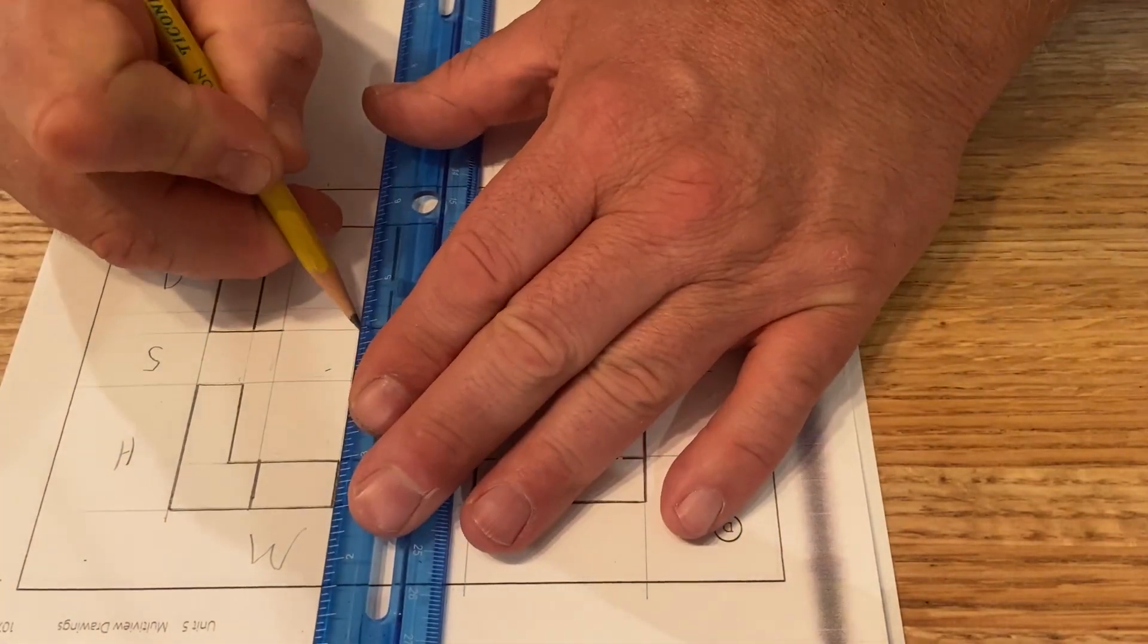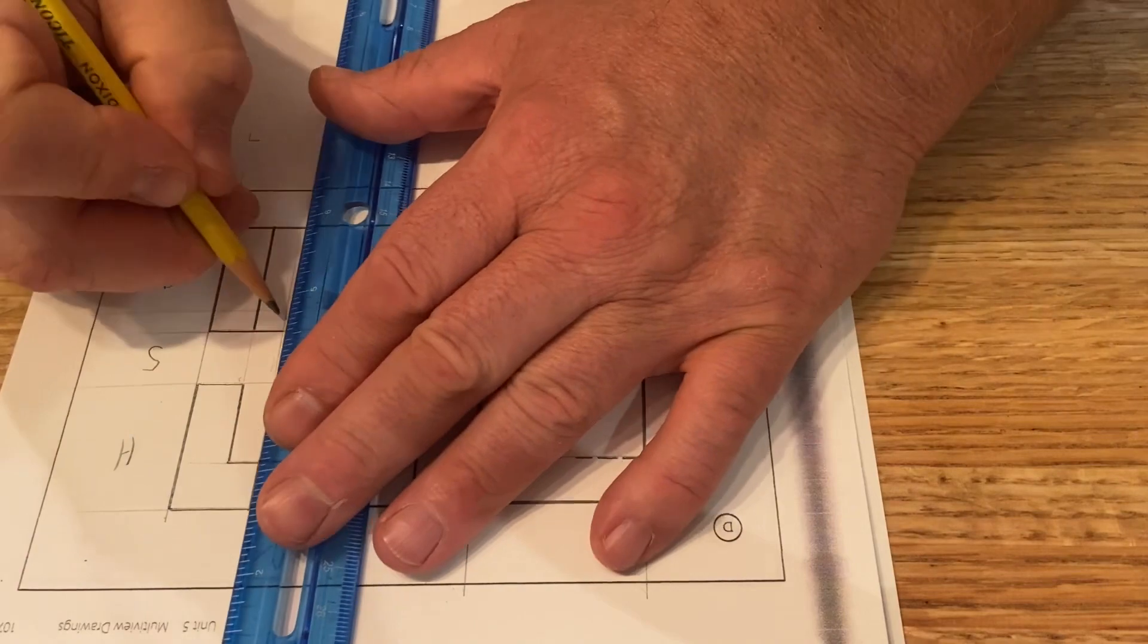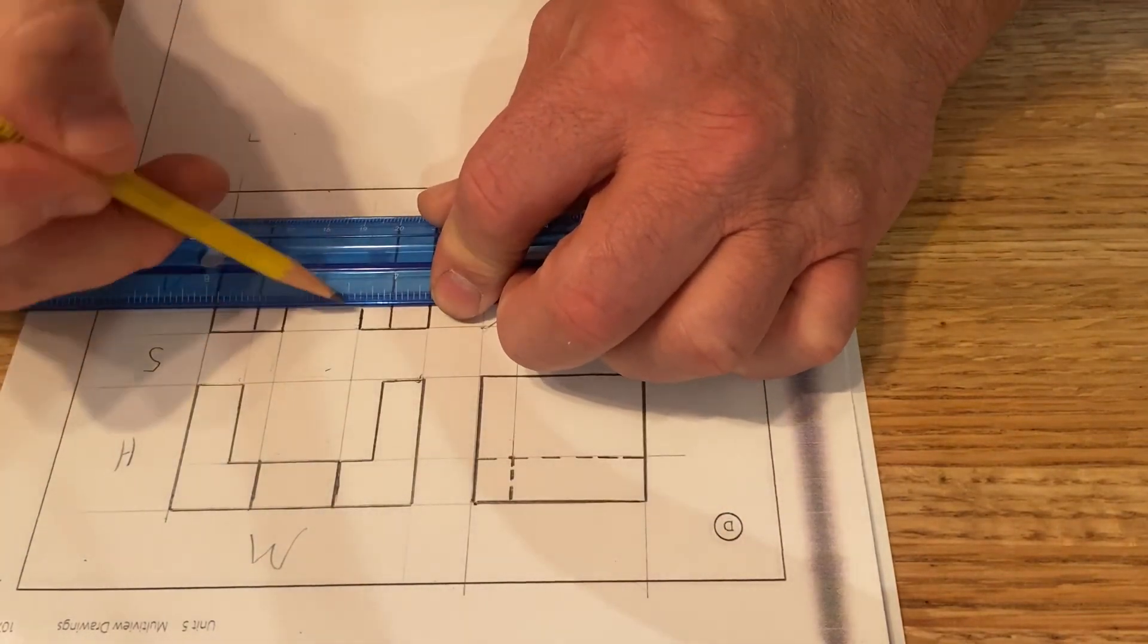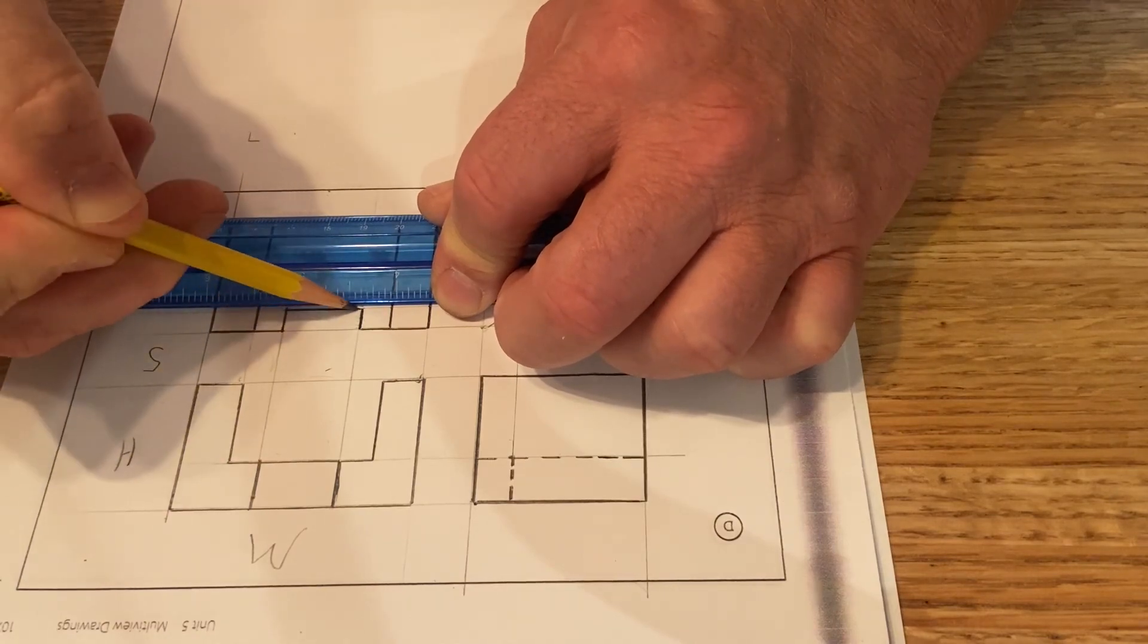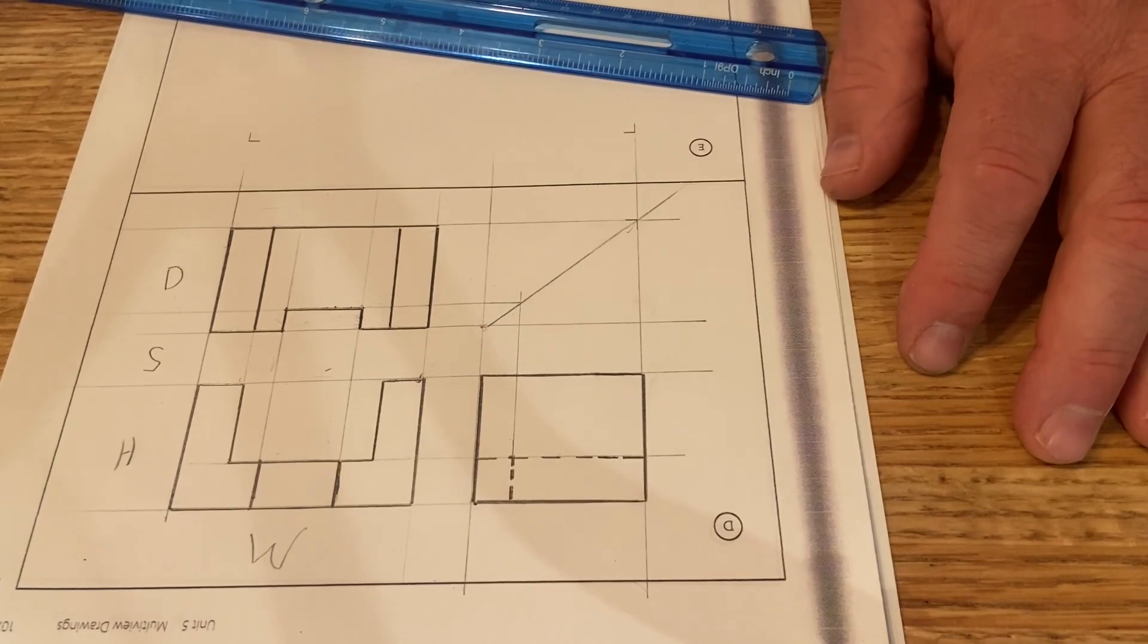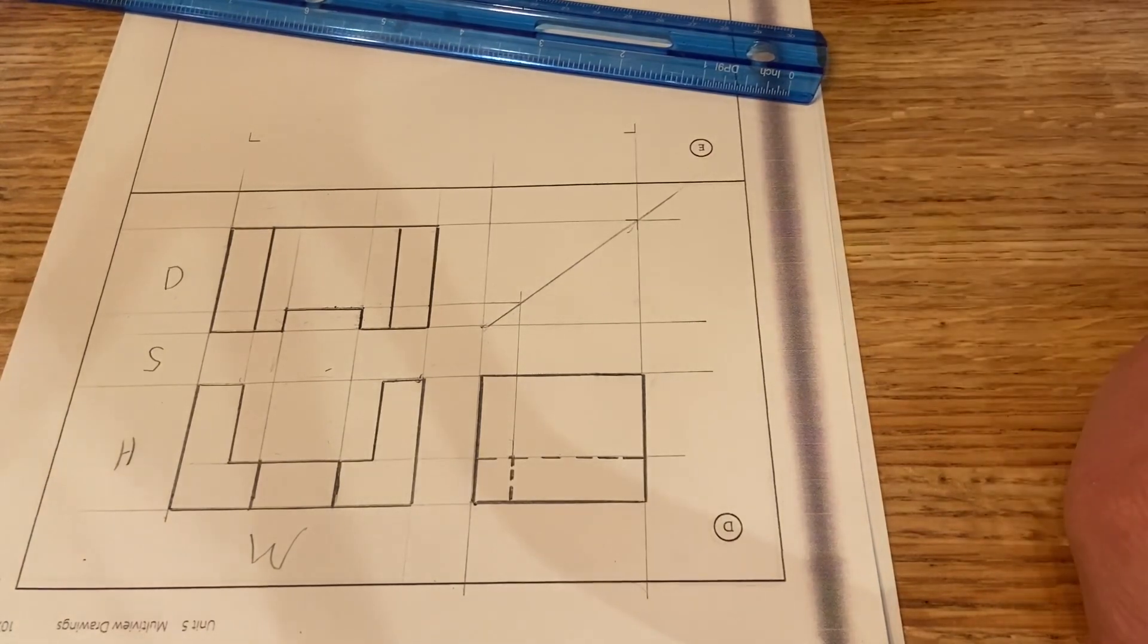Now we can go back in now and fill this in. So we'll make sure we know that those are both nice and solid object lines. And now we see the object here. That's a solid object line there as well. And now we've got our drawing finished.